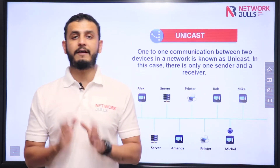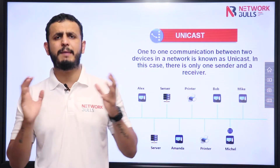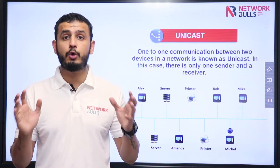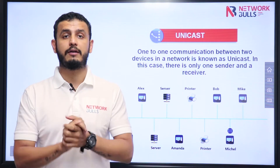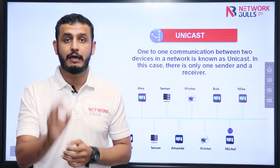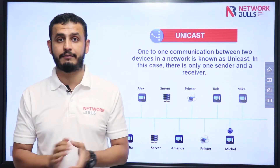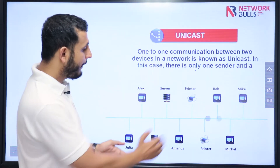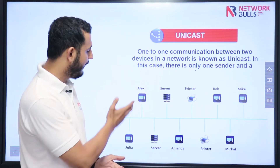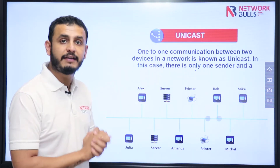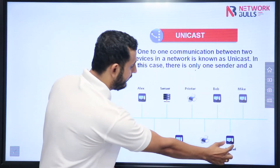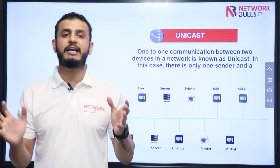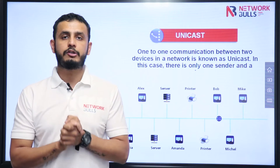First one we have unicast. What do you mean by unicast? Unicast means one to one communication, when there is one sender and one receiver. Like you can see here, Michael is sending the information and Alex is receiving the information. So there is one sender and one receiver, so we call this communication unicast.